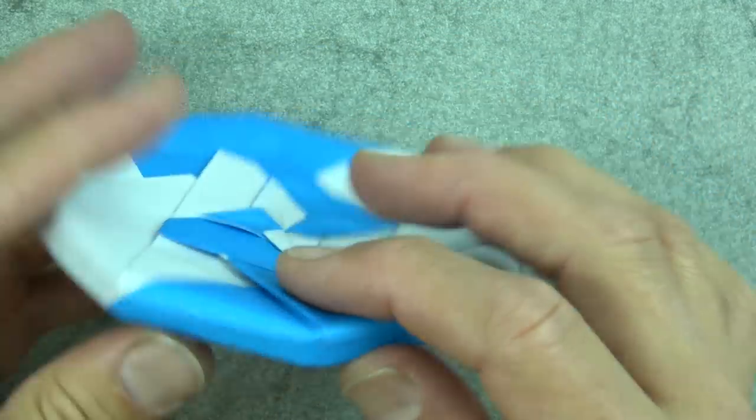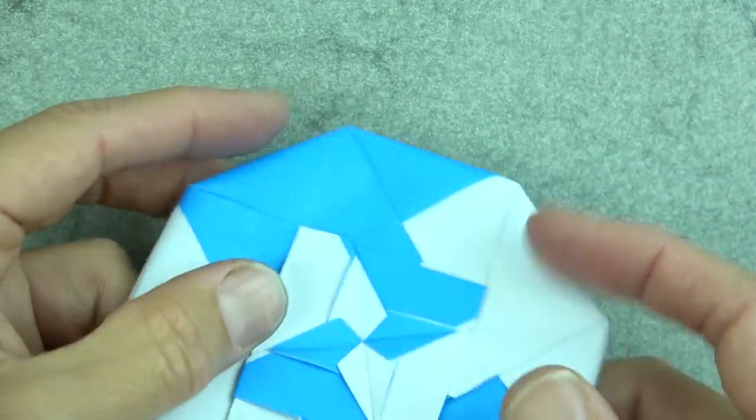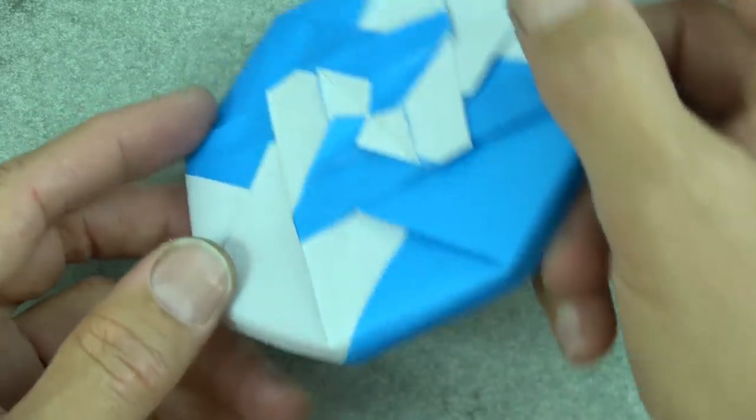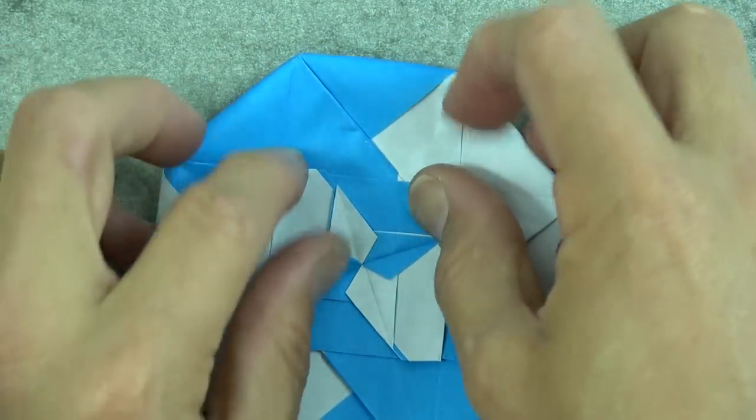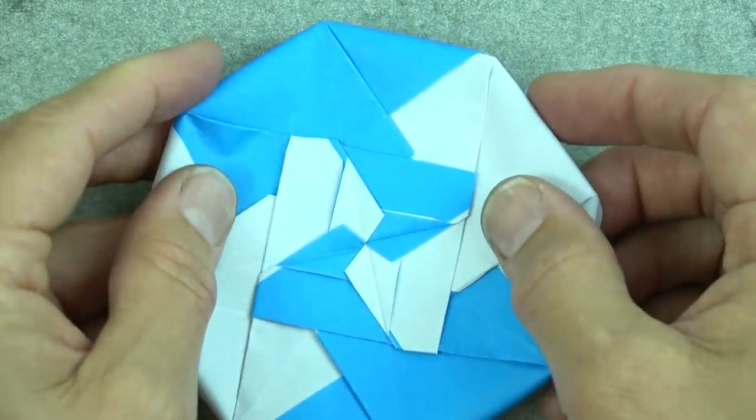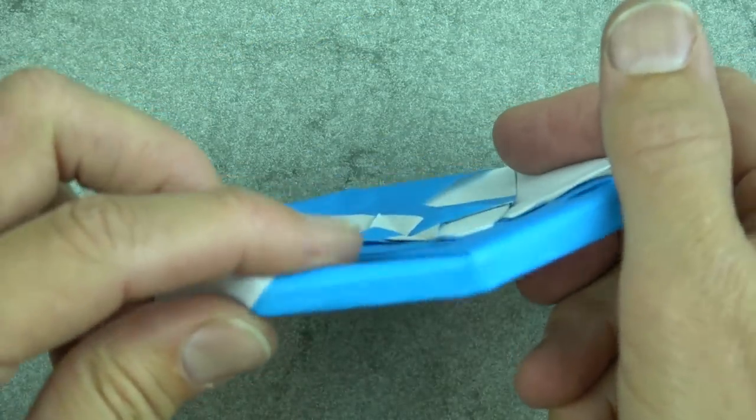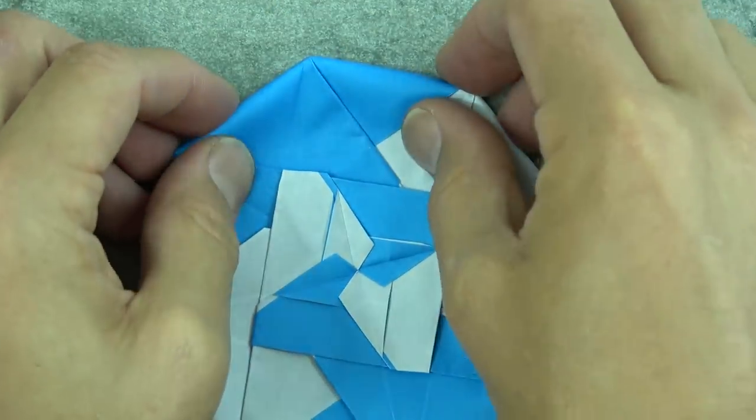And the more concave this is, the more that this goes down, the more when you fly it, it'll fly to the left. And so you just want to kind of balance how concave it is so that you have just the perfect amount and it'll fly straight, and that takes experimentation.